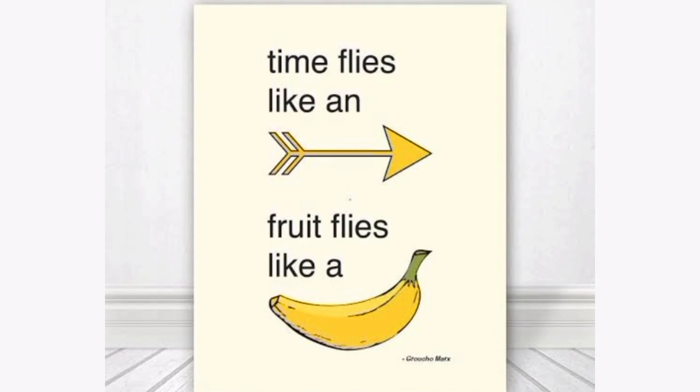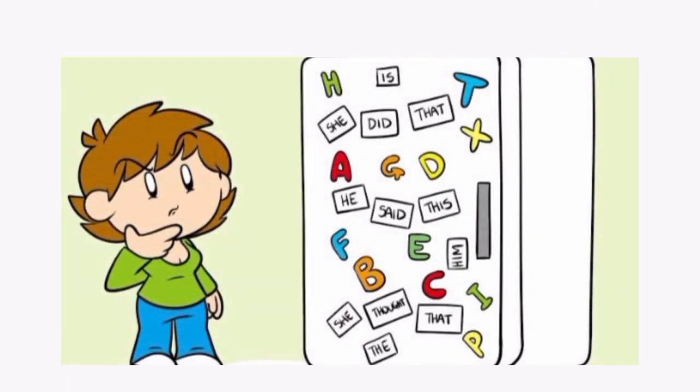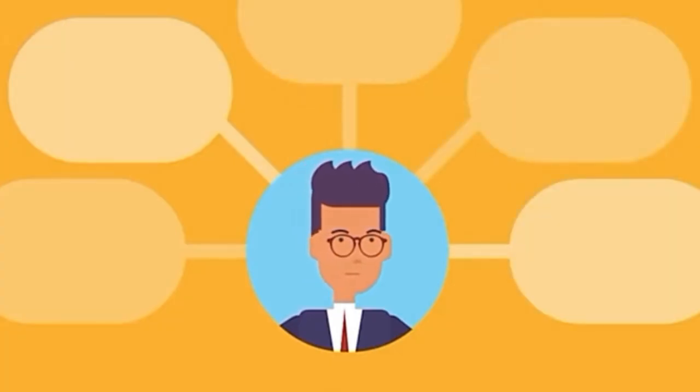Time flies like an arrow but fruit flies like a banana. If you take both sentences in the same way, then confusion can be created.